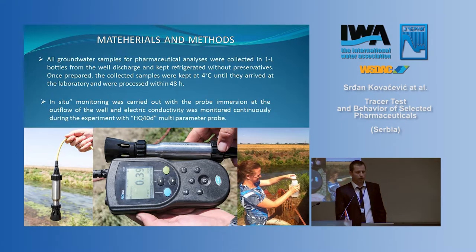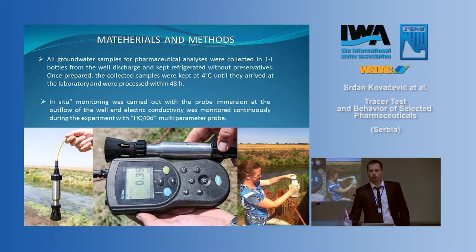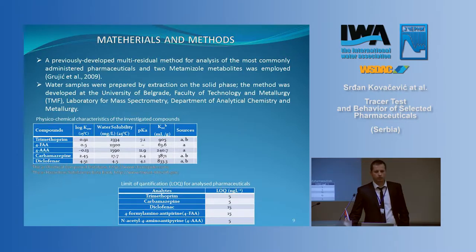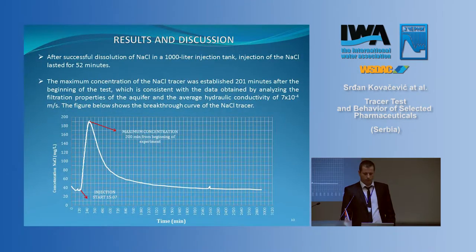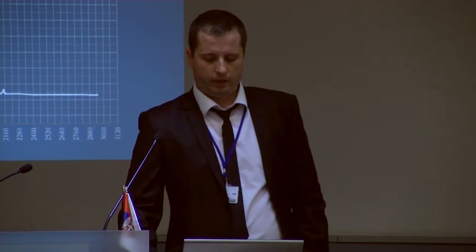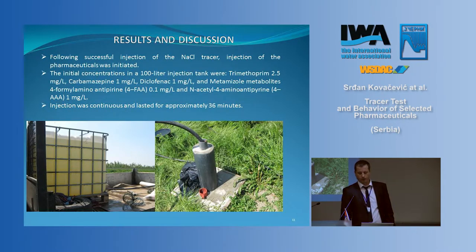Among the monitored parameters are electric conductivity, redox potential, dissolved oxygen, pH, and temperature. Colleagues from Belgrade helped us with the analytical methods. There were more than 60 groundwater samples. To conclude, after successful dissolution of fluoride in a 100-liter injection tank, the injection lasted approximately 50 minutes and we obtained the breakthrough curve of fluoride. The time-concentration curve shows approximately 200 minutes from the beginning of the experiment to the maximum peak. After that, we injected pharmaceuticals.